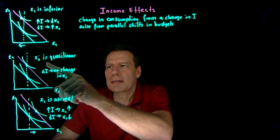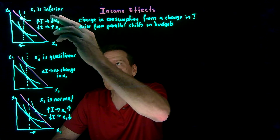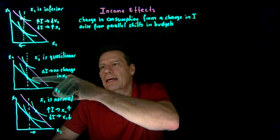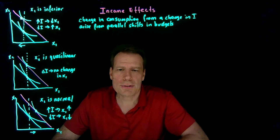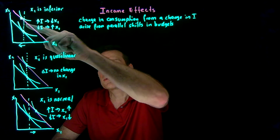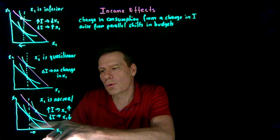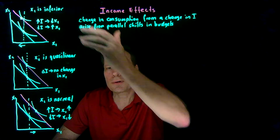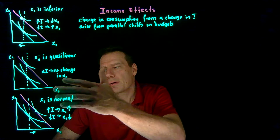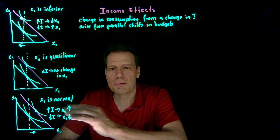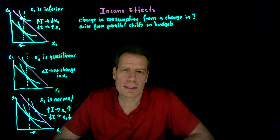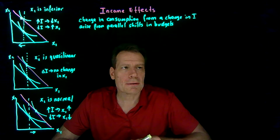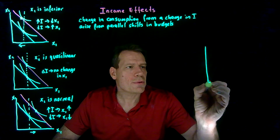You can see that x1 being quasi-linear is borderline between x1 being inferior and x1 being normal. In the case of quasi-linear goods, her consumption doesn't change as income goes up; in the case of inferior goods, it falls; and in the case of normal goods, it increases. So whether a good is normal, quasi-linear, or inferior for a consumer depends on the map of her indifference curves and how these indifference curves are related to one another. Another example that draws on some types of preferences we've talked about is the case where we have homothetic tastes.